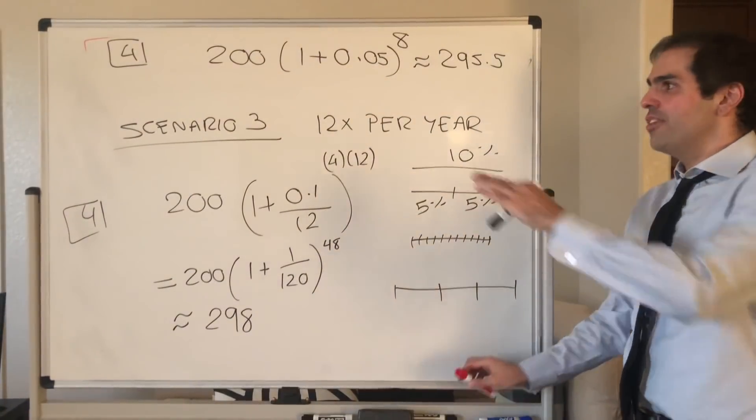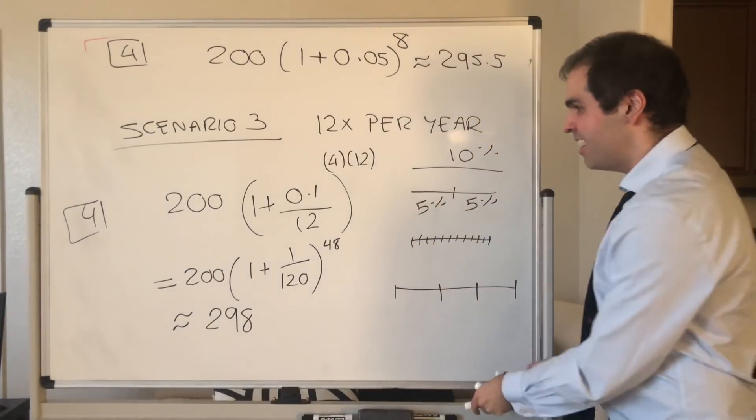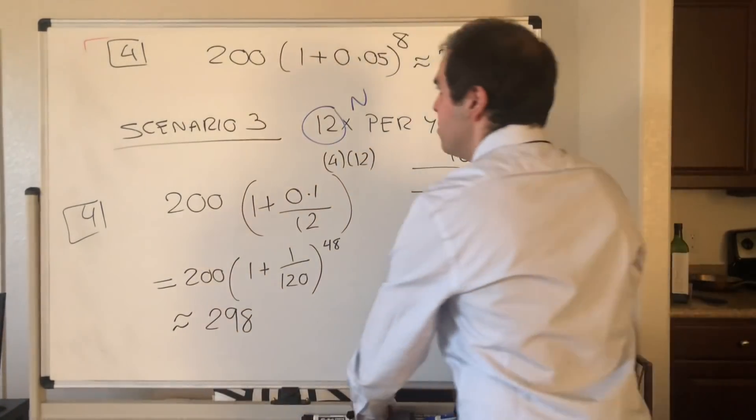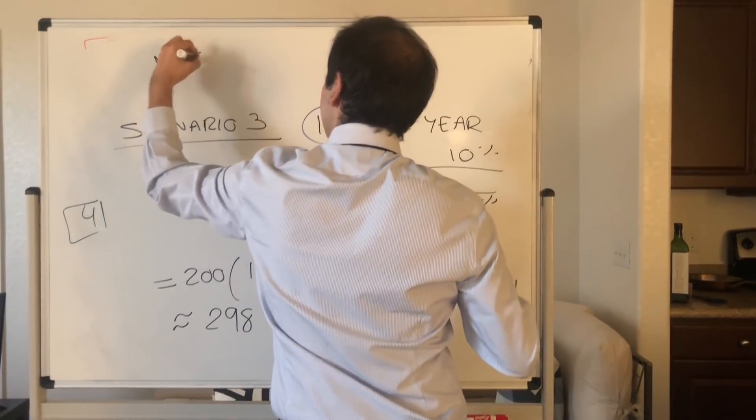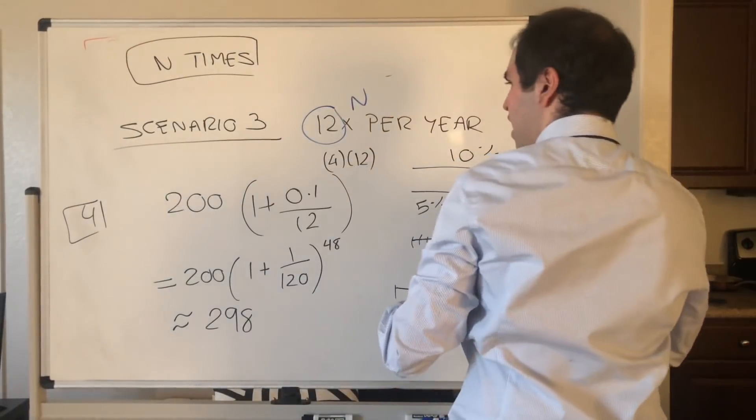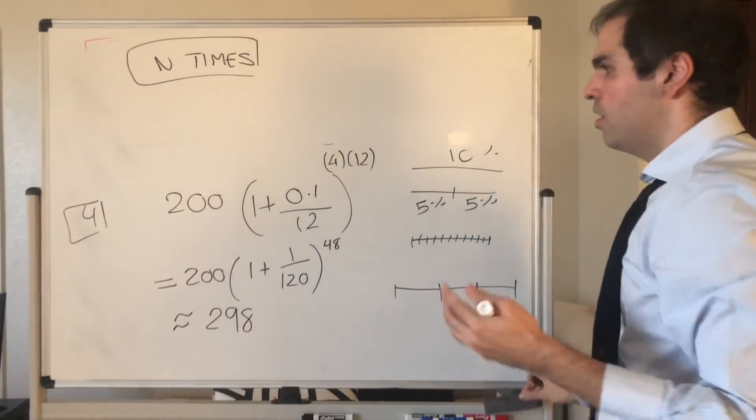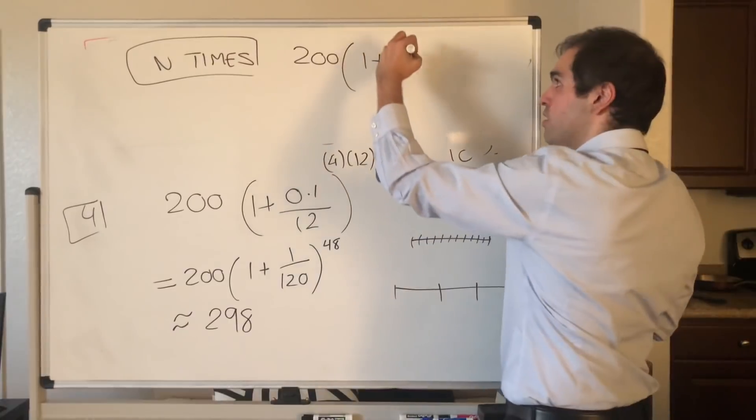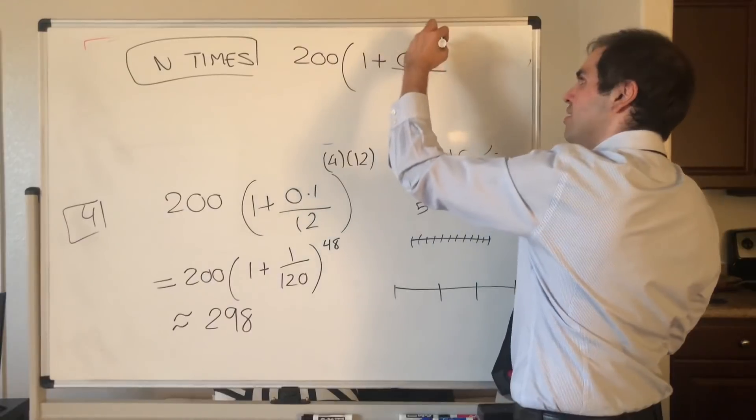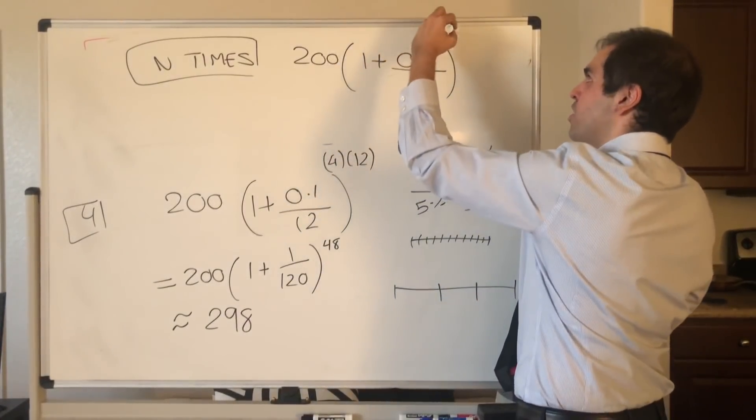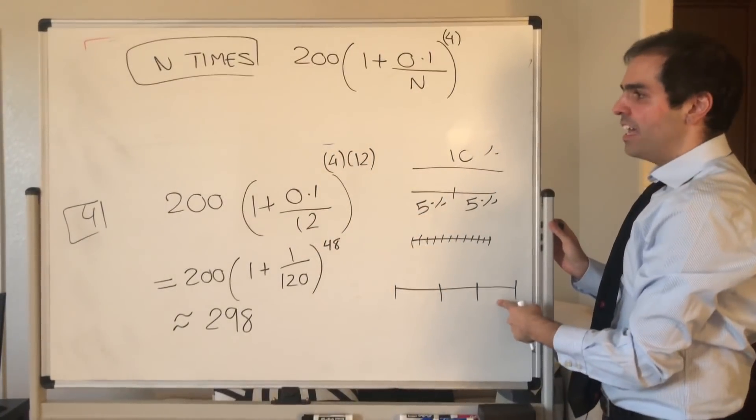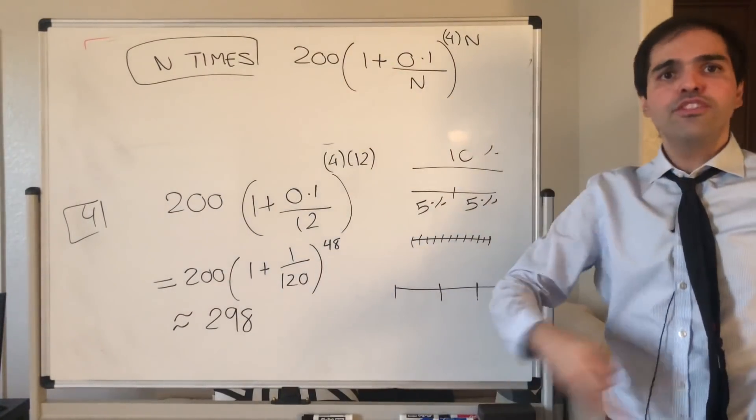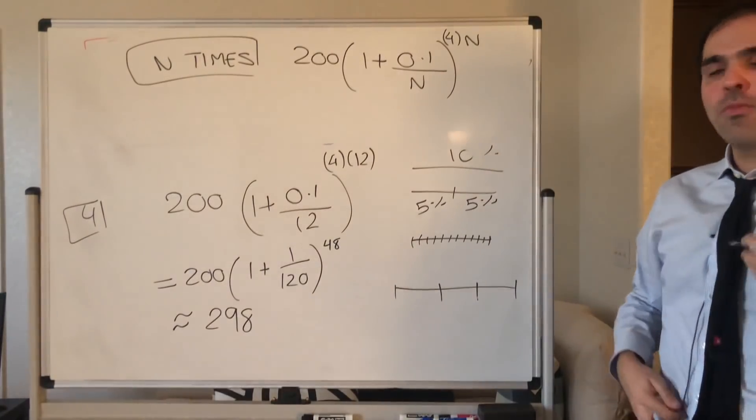All right, now the question is, here we did it once per year, twice per year, 12 times per year. What if you just do it n times per year? Well, it's kind of the same thing as before. So in general, for n times per year, what do you do? You start with 200, and then 1 plus your interest rate, 0.1, divided by how many times you have, so divided by n. And then, because we want four years, we have four. And same thing, how many times do you do it per year? n times. So in general, if you do it n times per year, you get the following formula after four years.